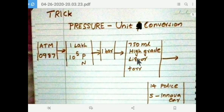So we will confuse how to convert ATM to Pascal, then Pascal to bar, then millimeter of Hg to Tor, or millimeter of Hg to pound per square inch PSI. If you confuse this, it is very difficult to do engineering practice problems.